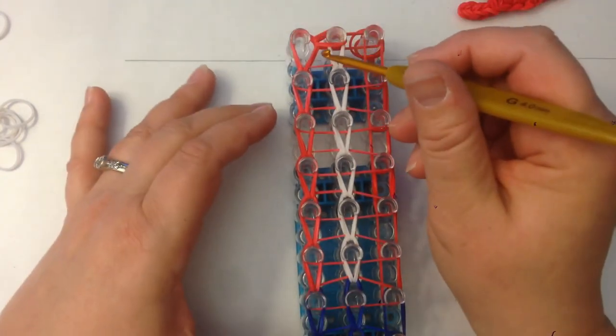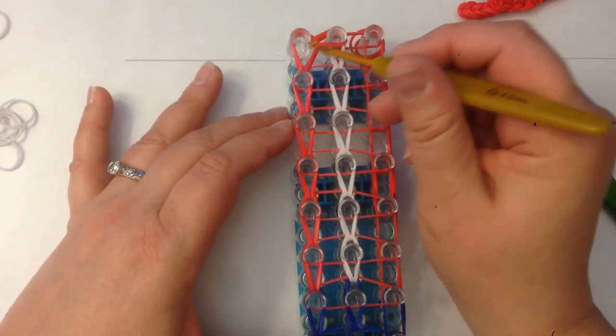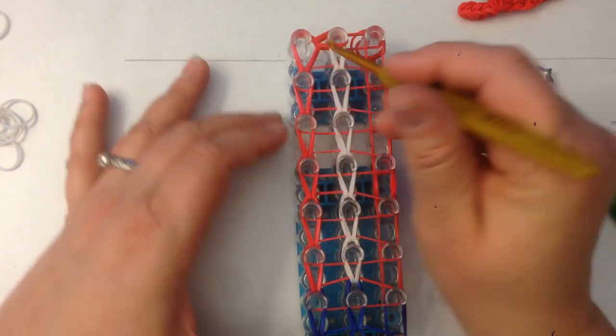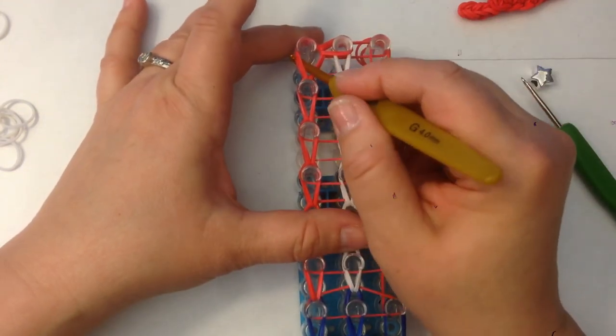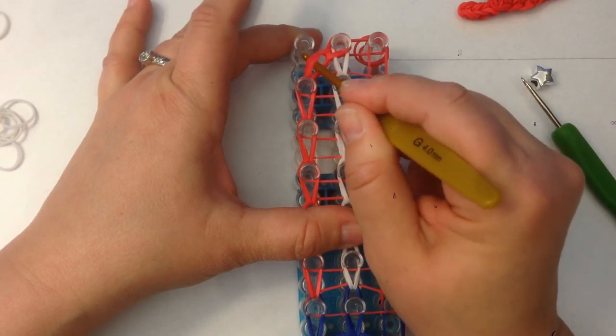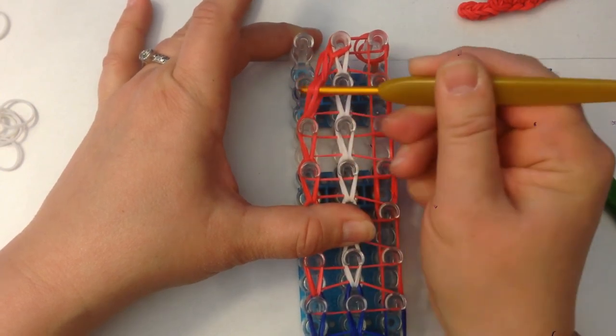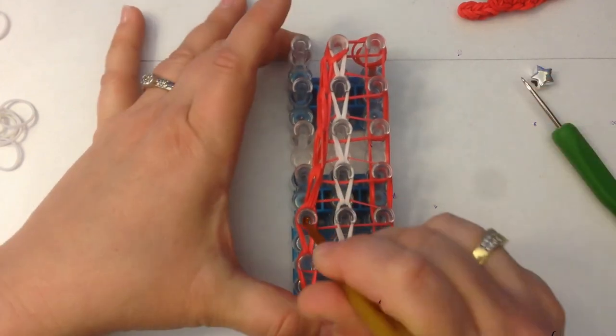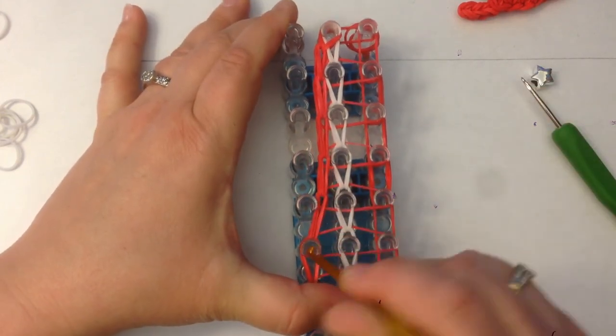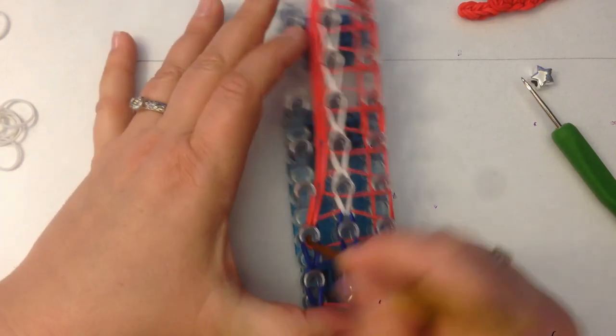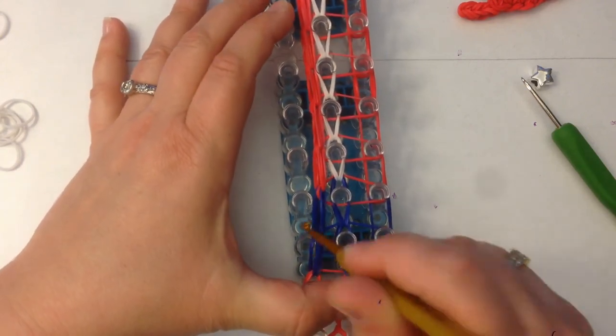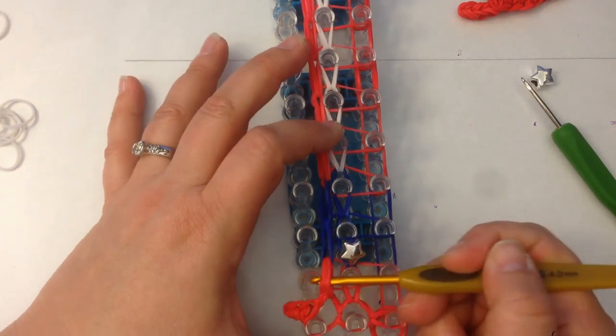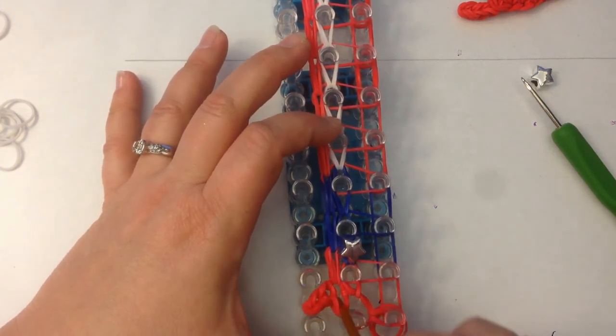Now we don't need a holding hook. This has actually been loomed in by this band here. So what we're going to do is we're going to take this off the loom, completely off, just this first column.